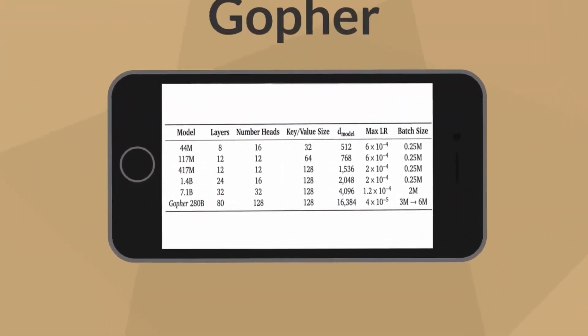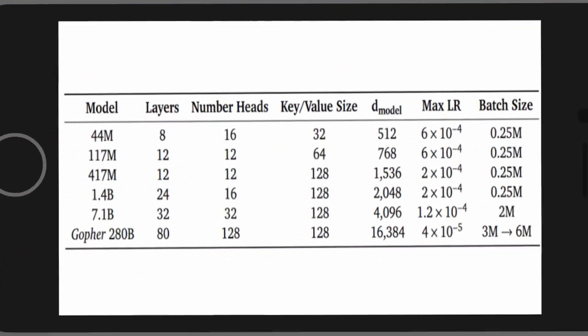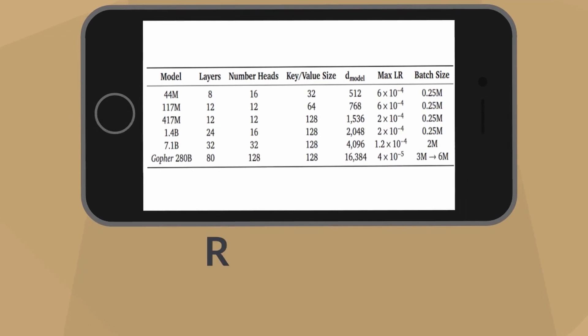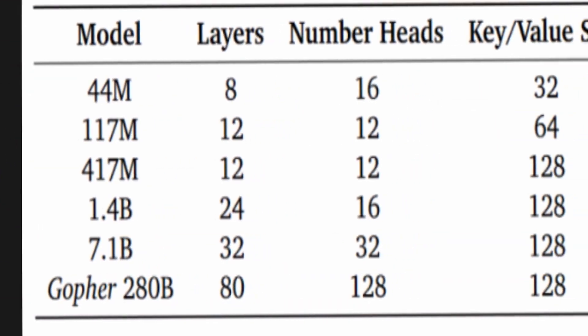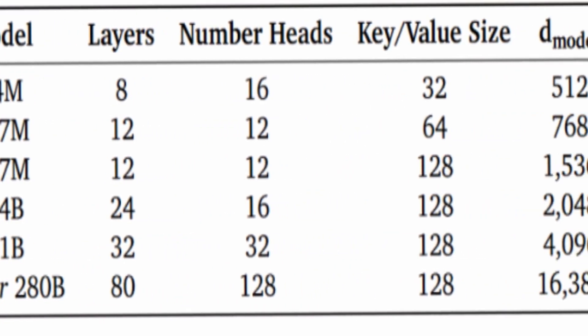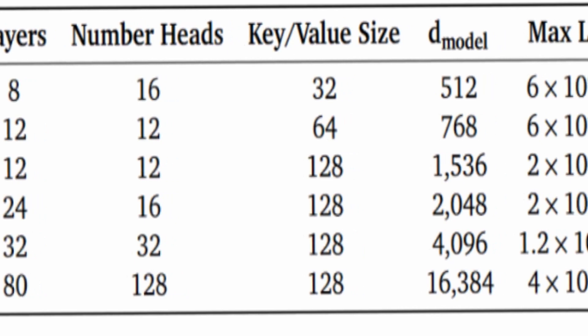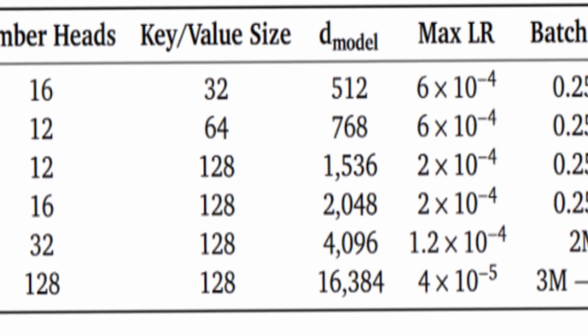This shows the model architecture details of Gopher with different numbers of parameters. The table summarizes the architecture details of the Gopher language model across various scales, as analyzed by Rae et al. The models are compared based on parameters such as the number of layers, attention heads, key value size, dimensionality (D model), learning rate (max LR), and batch size.